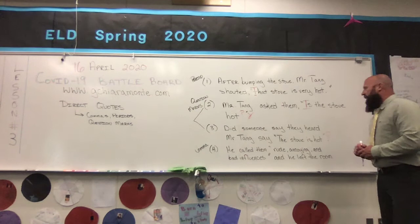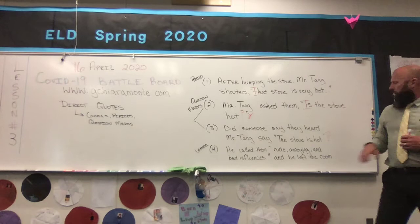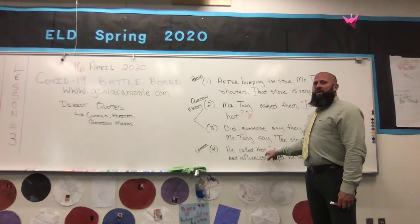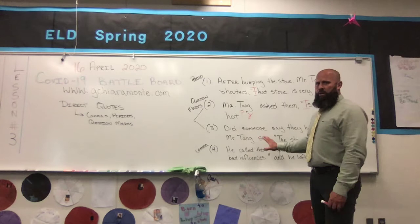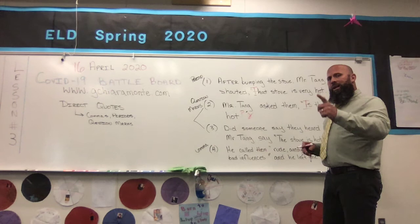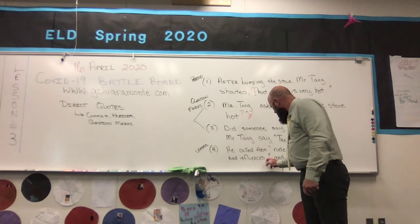Activity number four is a comma. 'He called them rude, annoying, and bad influences, and he left the room.' Do we need to capitalize here? Is 'rude, annoying, and bad influences' a complete sentence? No — so we're going to leave it lowercase. We do not need a comma necessarily at the start. It's all one thought. Remember the hard and fast rule: we want to block the comma inside the direct quote. So we put the comma inside the quote: 'rude, annoying, and bad influences,' and he left the room.